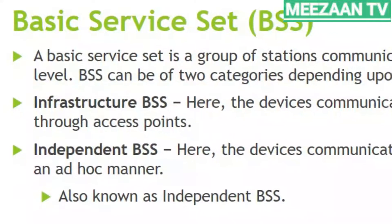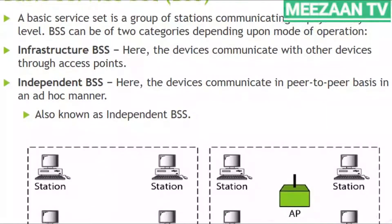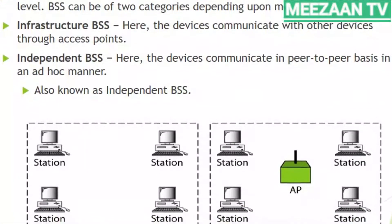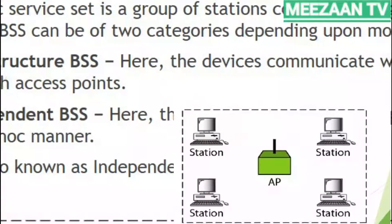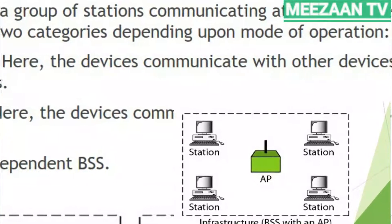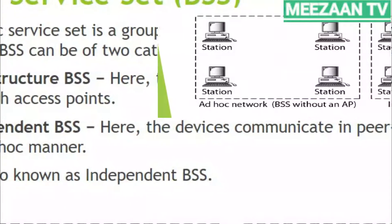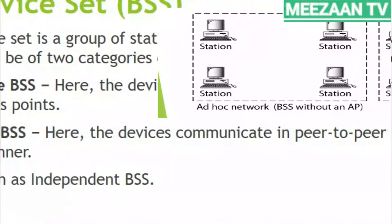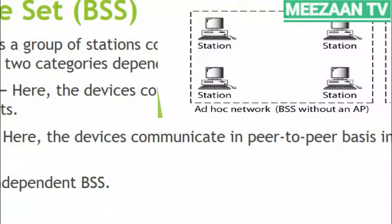The wireless LAN architecture is divided into two sets: the Basic Service Set (BSS) and the Extended Service Set (ESS). A BSS is a group of stations communicating at the physical layer. BSS can be of two categories: infrastructure mode, where devices communicate through an access point, and independent BSS (ad-hoc mode), where devices communicate peer-to-peer, with each device acting as a unique router performing all tasks of an access point.